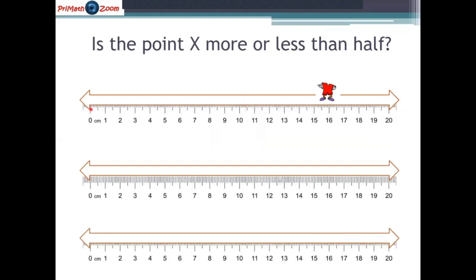If we're starting at zero and we end at 20, we need to divide 20 by two. So if we divide 20 by two, we'll get halfway, which is 10 right here. So is the X closer to the half, less than half, or more than half? The X is more than half because the X has passed the 10 and is on its merry way to the 20. So yes, the X is more than half.